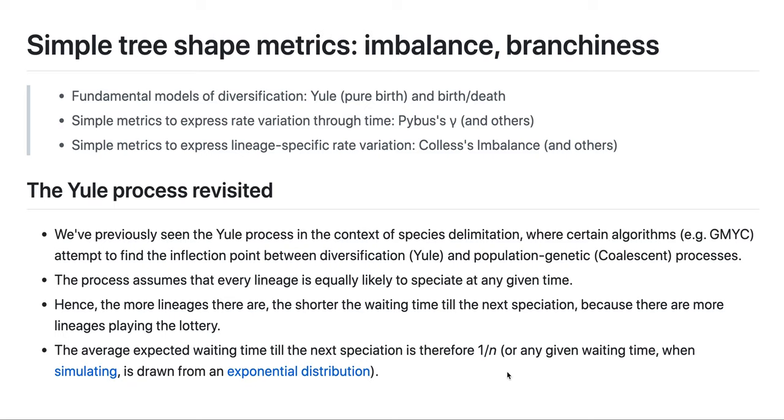First we're going to revisit a concept that we already saw in species delimitation, that's the Yule process, where for example the generalized mixed Yule coalescent used the Yule pure birth model for the process that is supposed to shape the tree in the deeper nodes, and then in the shallower nodes, its coalescent processes.